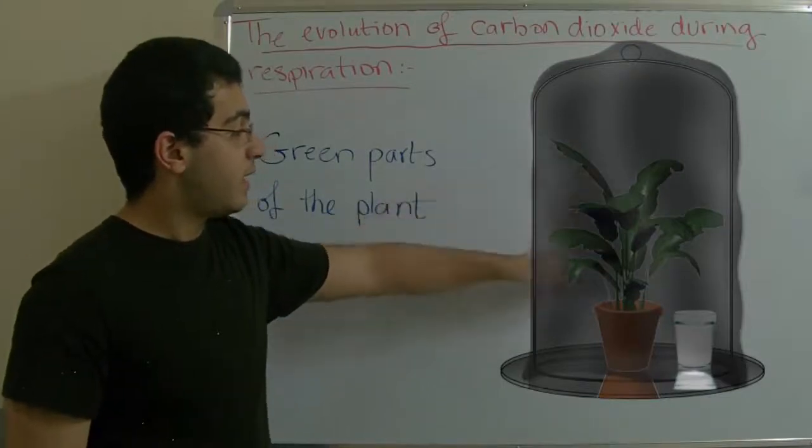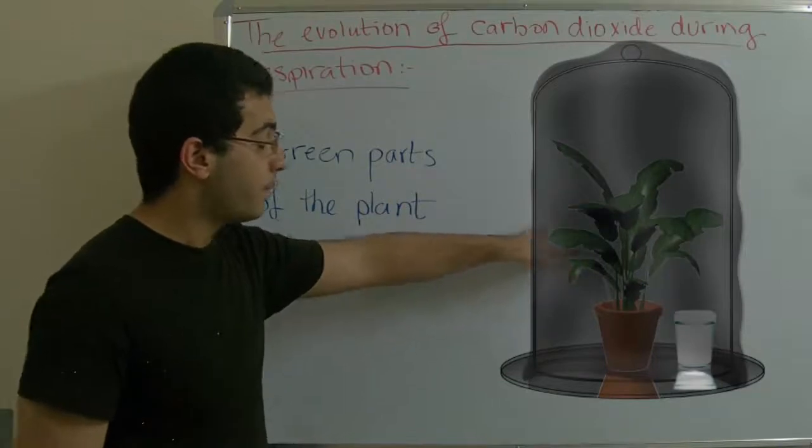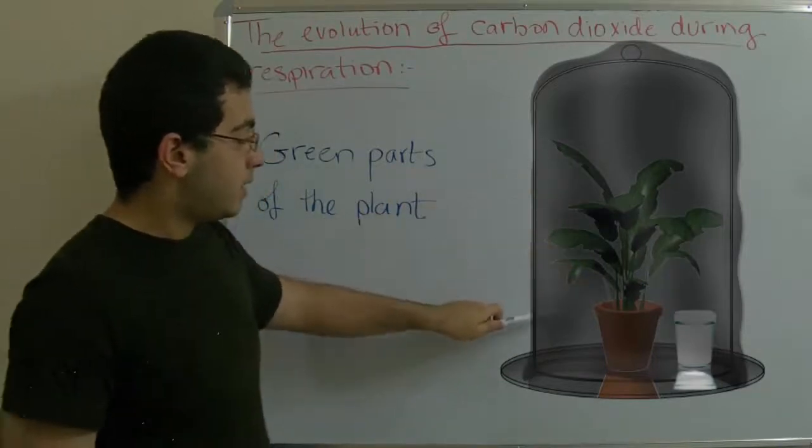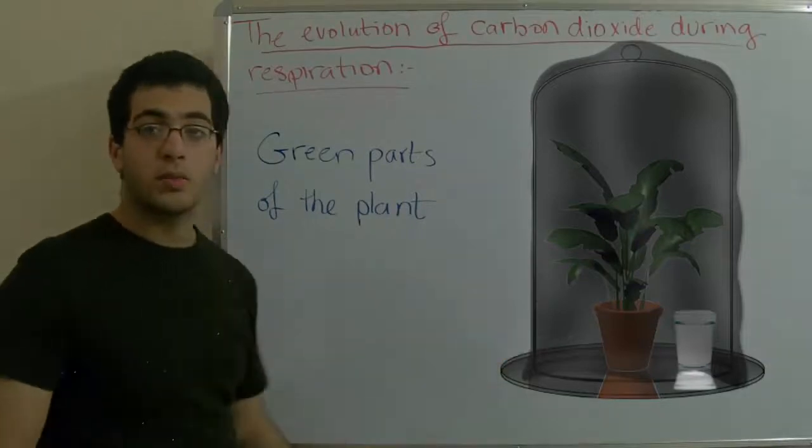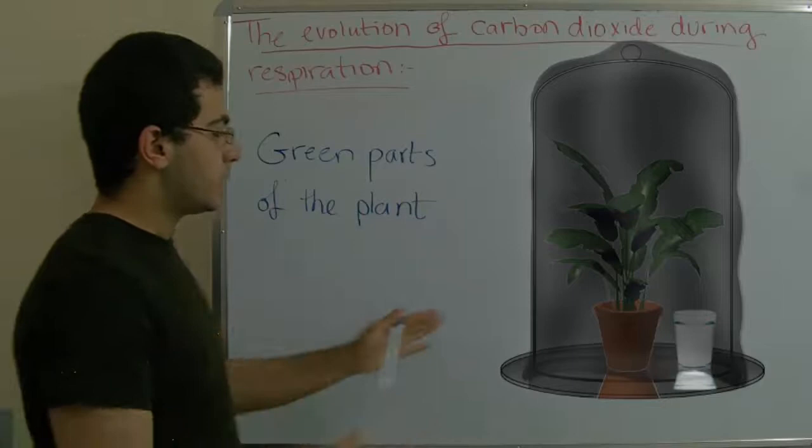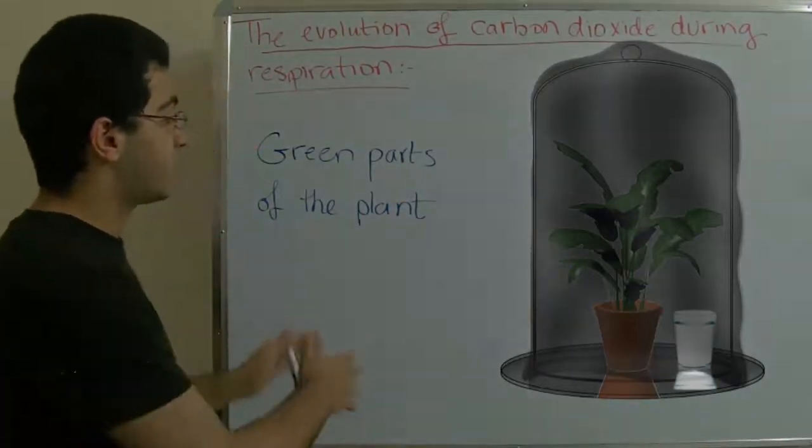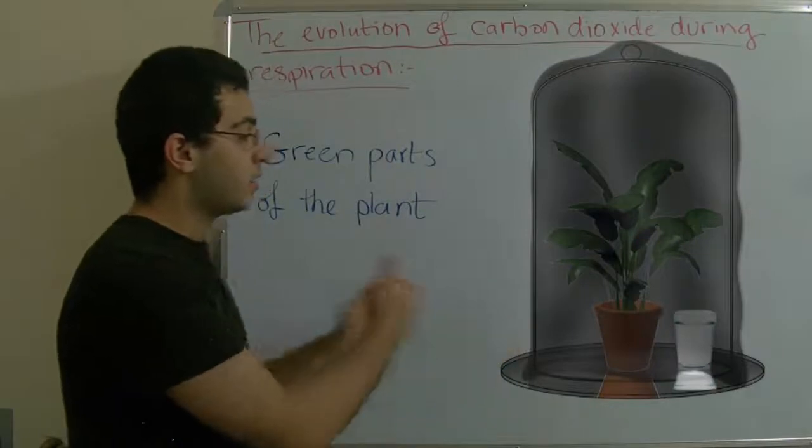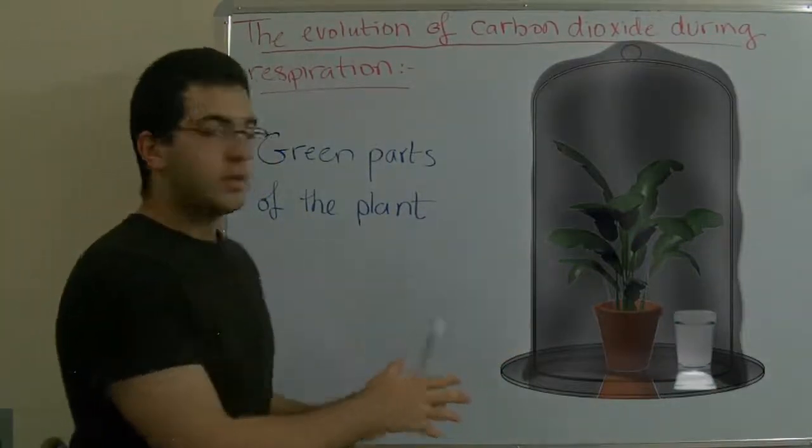Of course, its stem and leaves are subjected to the air. This apparatus is put over a glass shed in order to prevent any leakage of air or any other factors in our experiment from inside the beaker. So this is the first part.